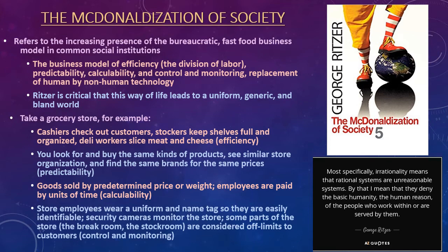The fourth aspect is control and monitoring. In a grocery store, employees wear a uniform and a name tag so they're easily identifiable. Security cameras monitor the store, both to keep an eye on employees and shoppers to prevent shoplifting. Some parts of the store, like the break room or stock room, are off-limits to customers. So there's an aspect of control — you can control what products are being brought out and how many boxes of cereal are on the shelf at any one time. Those are our four main aspects of McDonaldization.